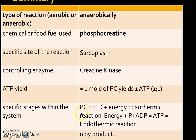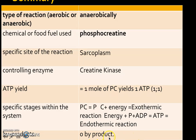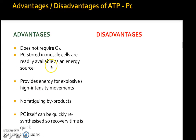For exam questions you'll need to know the specific stages of the system. Phosphate creatine releases the phosphate, giving you phosphate plus creatine (separated) plus energy — that's the exothermic reaction. Then the energy plus the phosphate joins with adenosine diphosphate to give you ATP — that is the endothermic reaction.